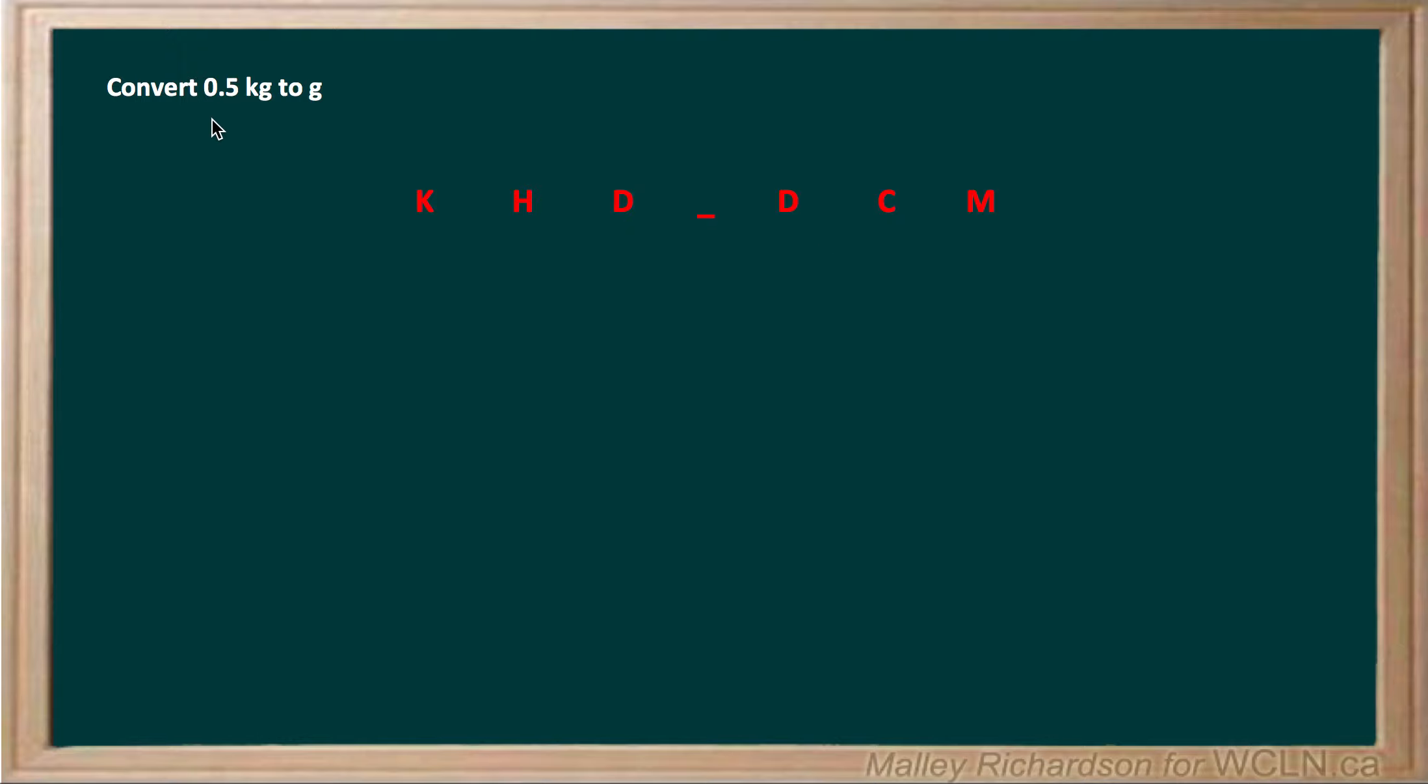So to do this we first want to find what our base unit is. Well our units are kilograms and grams and we can see the kilograms starts with kilo so that's not our base unit, so that must mean grams has to be our base unit. So because grams is our base unit we want to place that in the middle of our arrangement of letters above the underscore.